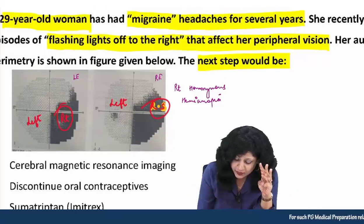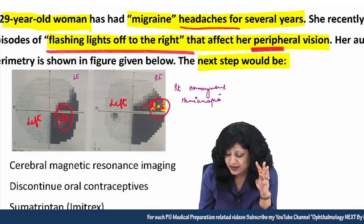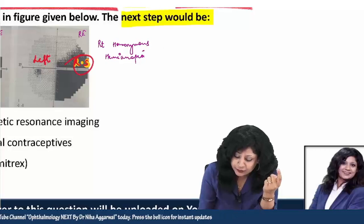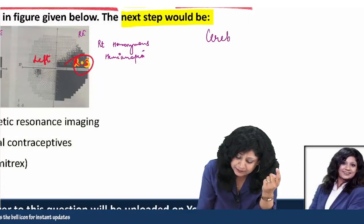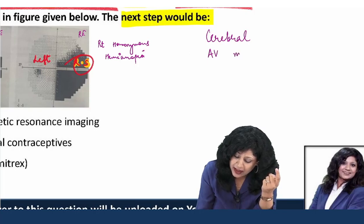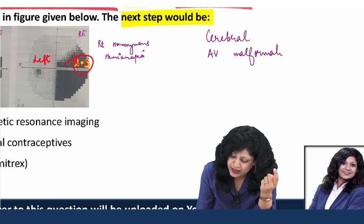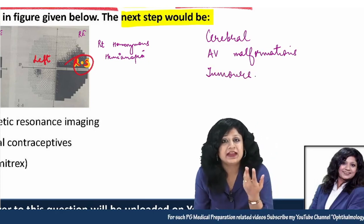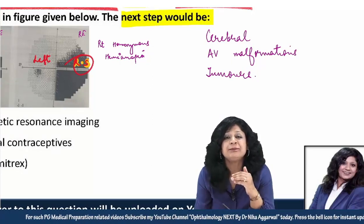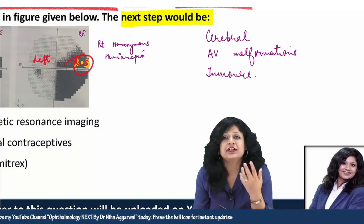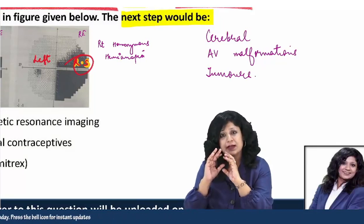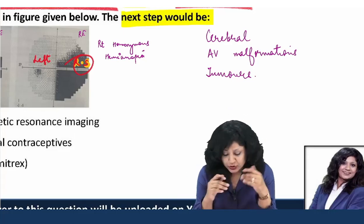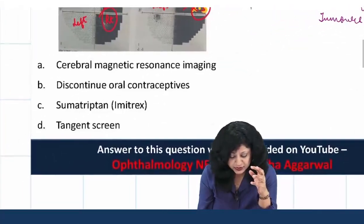Three things to consider: the headache, the flashing lights, and the peripheral vision loss. This could be due to cerebral arteriovenous malformations — AV malformations — or even cerebral tumors. Tumors can lead to headache that simulates migraine, and AV malformations could also be there. These malformations and tumors will compress the fibers and cause a visual field effect.